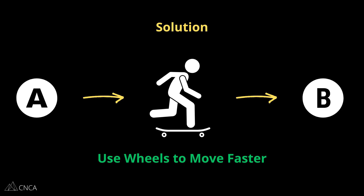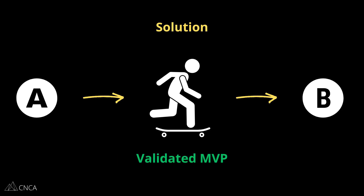We can actually get from A to B faster compared to walking and even running since it's saving us energy. Our solution is validated. The next iteration of this is a bike — the mechanics are a bit more refined, perhaps more comfortable. Still simple, but the core solution — the wheels — are still there.